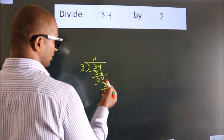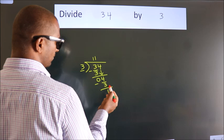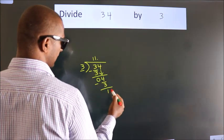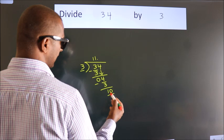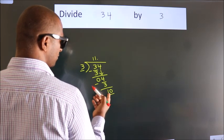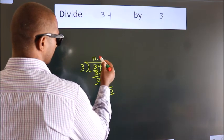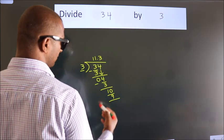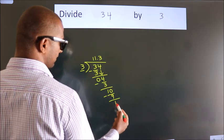After this, no more numbers to bring it down. So what we do is, we put dot take 0. So 10. A number close to 10 in 3 table is 3 3's 9. Now we subtract. We get 1.